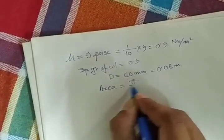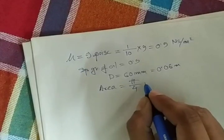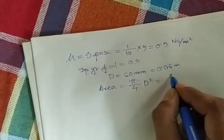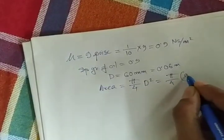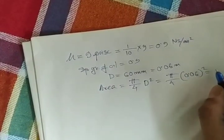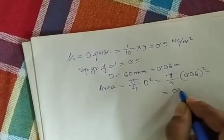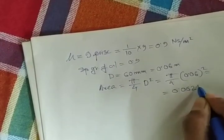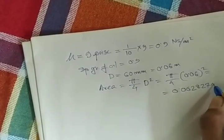Area is pi by 4 d square, pi by 4 times 0.06 square. If you do the calculation, you will get 0.0002827 meter square.